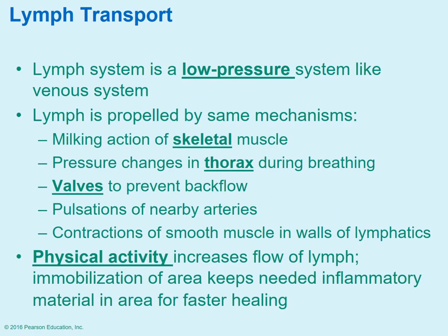The lymph system is a low-pressure system, similar to what we see in the veins. How do you move that lymph along? It's very similar to veins: skeletal muscles provide a milking action as they contract to push it along. The pressure changes that occur during respiration in the thorax area help move it. Valves help to prevent backflow. Also, because the lymphatic vessels often lie right next to arteries, the pulsating of the arteries helps move lymph through the lymphatic vessels. Physical activity increases the flow of lymph. Oftentimes when an area needs to heal, immobilization keeps some of the inflammatory components in that area for faster healing.